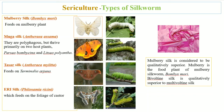Next is eri silk, obtained from Philosamia ricini, which feeds on the foliage or leaves of the castor plant. Talking about quality, mulberry silk is superior over all other types of silk. The mulberry plant is the food plant used by Bombyx mori, and mulberry silk is bivoltine, as compared to other types of silk which are multivoltine.